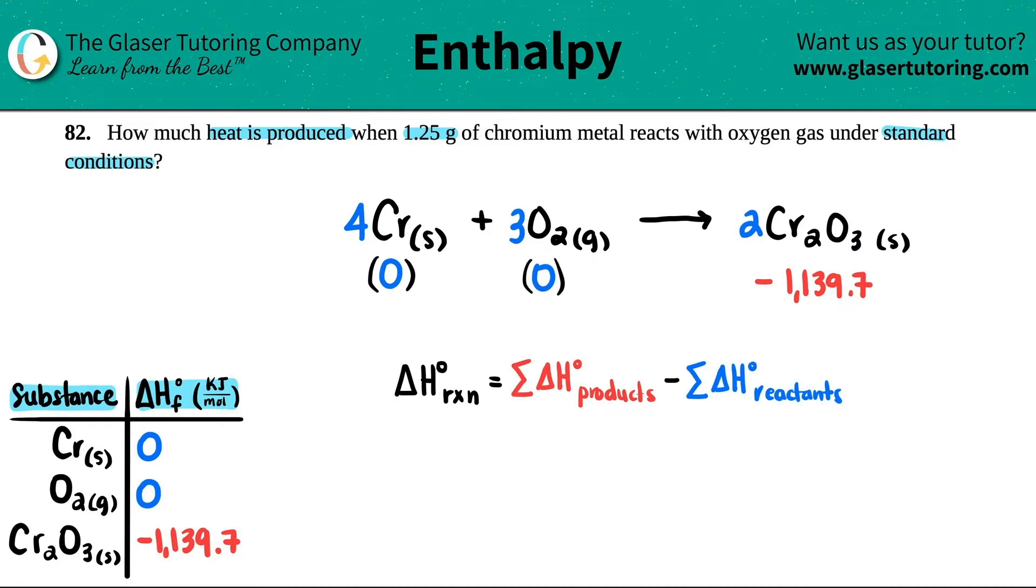Remember, we've seen this time and time again. We're going to take those numbers from the back of the textbook and multiply by how many we have in our equation. It's four chromium, so multiply by four. There's three oxygens, multiply by three. There's two Cr2O3s, multiply by two. I have to sum the reactant side up: Cr plus O2. On the left-hand side it's zero. On the right-hand side, 1139.7 times two equals negative 2,279.4.